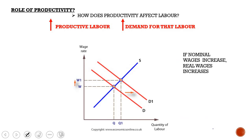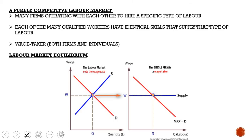The role of productivity in labor: the more productive your labor, the higher the demand for that labor, because you will be making more revenue or profit for your employer. You have a fixed supply curve and your demand curve will shift upward, indicating an increase in demand, giving you an increase in wages as well as an increase in your equilibrium quantity. If nominal wages increase, your real wage also increases.